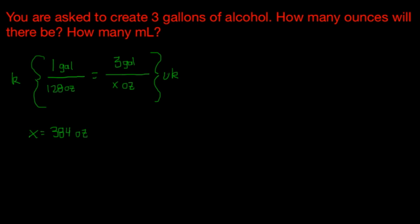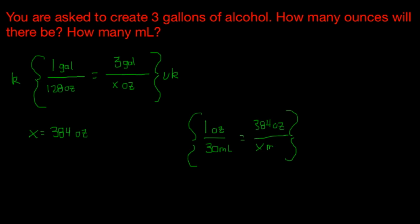For the second part, how many milliliters? If we have the ounces, we know that one ounce equals 30 mL. We want to know how many milliliters are in 384 ounces. When we cross multiply and divide, that is going to give us x equals 11,520 milliliters. And that is how we would solve for that problem.